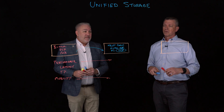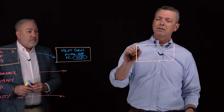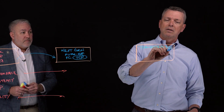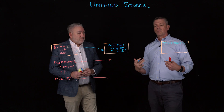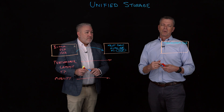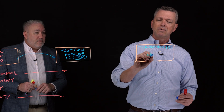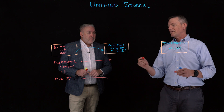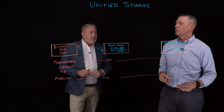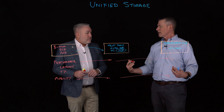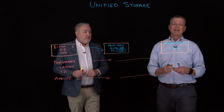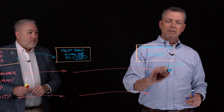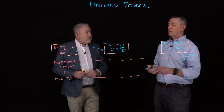Let's round out with a third bucket: transactional file. File storage means a lot of things, but when we talk about transactional file, we're talking about file storage protocols — NFS and SMB. These file-based storage protocols have the same expectations: high performance, very low latency, high throughput, and all the same mobility options, because they're running and supporting applications like Oracle NFS or VMware NFS. You don't get to pass on any of these requirements.